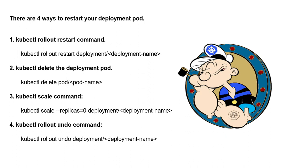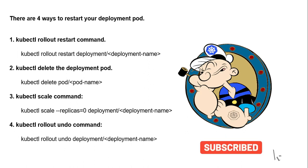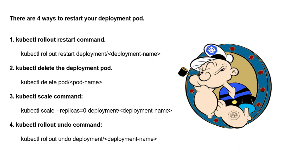The second one is kubectl delete pod — this method involves deleting the existing pod and then recreating a new one with the same configuration. The third one is the kubectl scale command — this method involves scaling the pod to zero, then scaling back to the original number of replicas, which effectively restarts the pod. The fourth one is kubectl rollout undo.